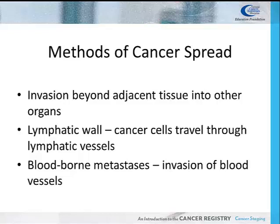Cancer cells are carried through the blood vessels within the primary tumor. Veins are more susceptible to invasion than thicker-walled arteries, allowing tumor cells to be transported through the bloodstream to another part of the body. This process is called bloodborne metastases.